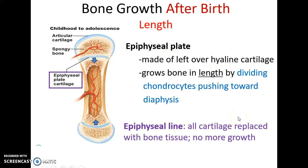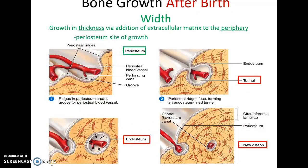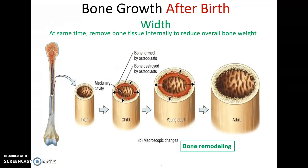Eventually the epiphyseal plate becomes the epiphyseal line in adults because long bones stop growing in length. For growth in width, osteoblasts in the periosteum deposit bone matrix that becomes calcified, forming tubes around blood vessels and nerves, leading to production of new osteons at the periosteum. The bone grows wider while the inside thins out so the overall bone thickness remains approximately the same — preventing bones from becoming excessively heavy.